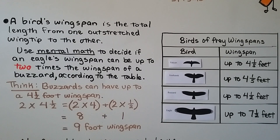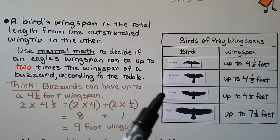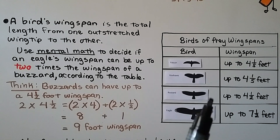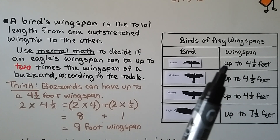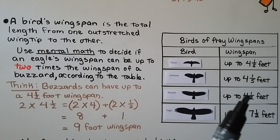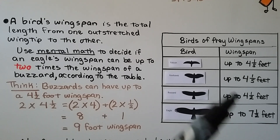A bird's wingspan is the total length from one outstretched wing tip to the other all the way across its body. We have a table showing birds of prey wingspans: a falcon's wingspan can be up to 4 and 1 fifth feet, a goshawk's also up to 4 and 1 fifth feet, a buzzard's up to 4 and 1 half feet, and an eagle's up to 7 and 1 half feet. We need to use mental math to decide if an eagle's wingspan can be up to 2 times the wingspan of a buzzard, according to this table.